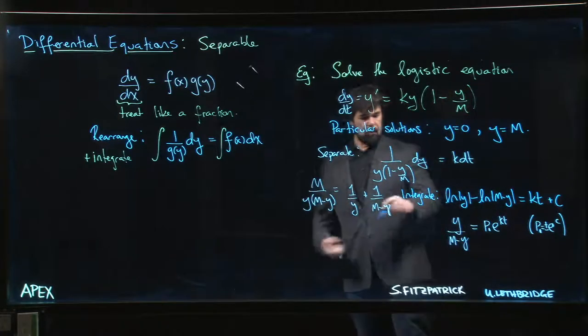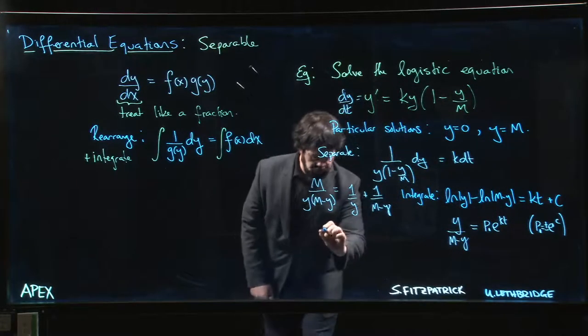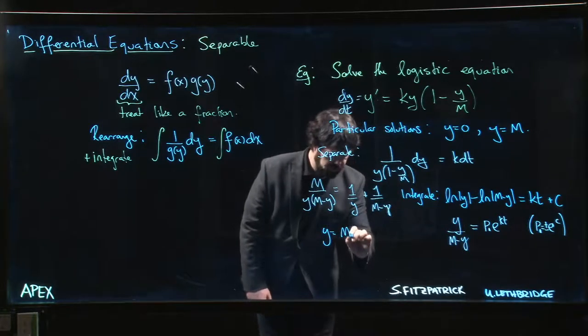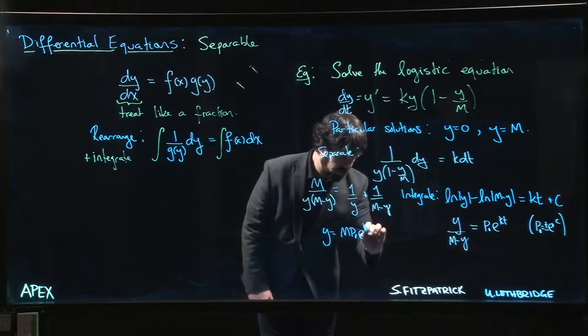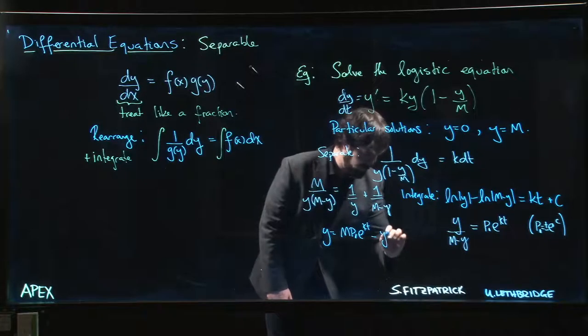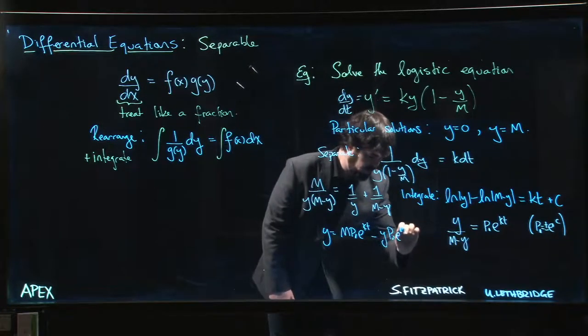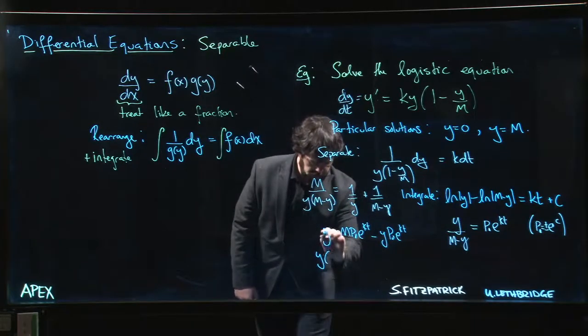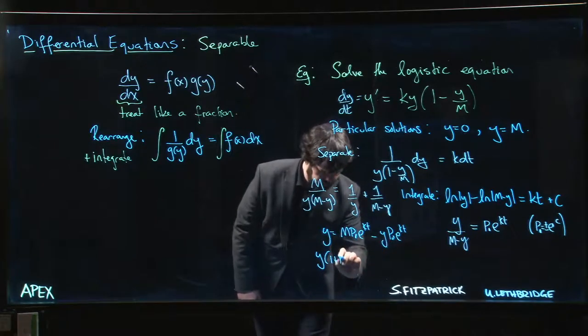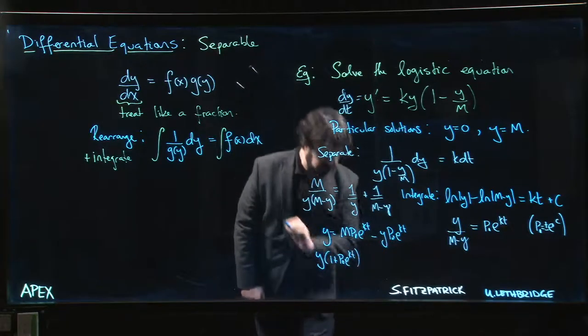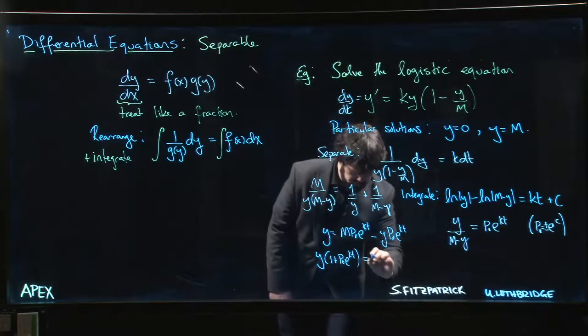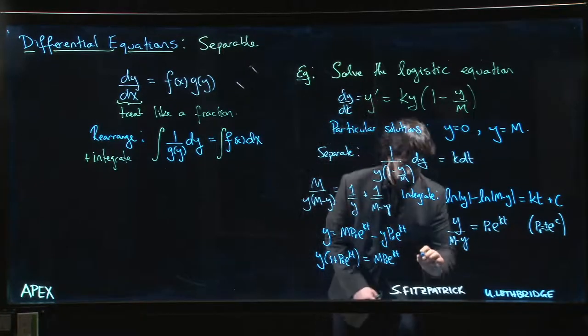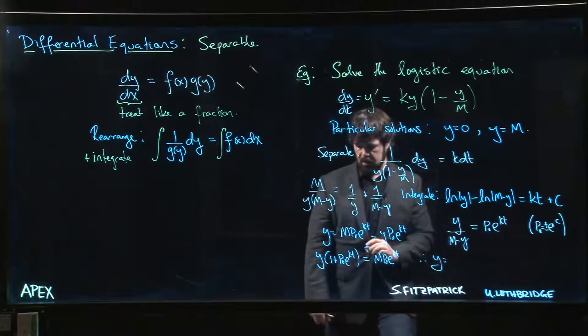You can try rearranging this thing. It turns out you can actually solve for y. It looks like a mess but you can solve for y. If you clear the denominator, you're going to get y is equal to M times p_0 e^(kt) minus y p_0 e^(kt). Move the y over to the other side, and now we have y(1 + p_0 e^(kt)) equals M p_0 e^(kt). And now you can solve for y.